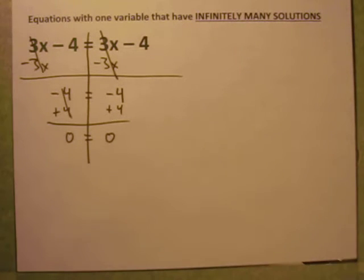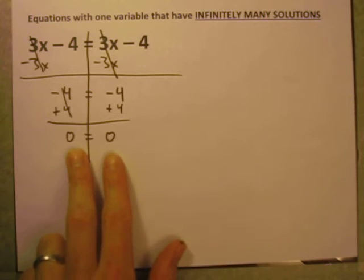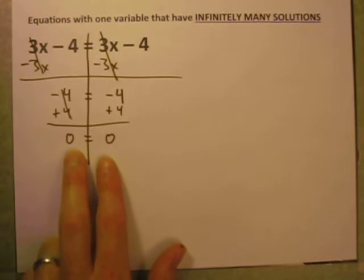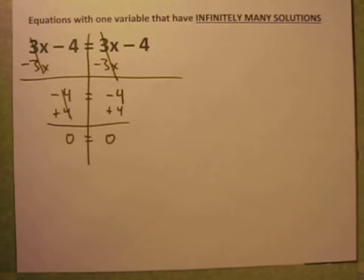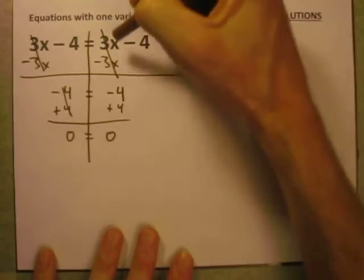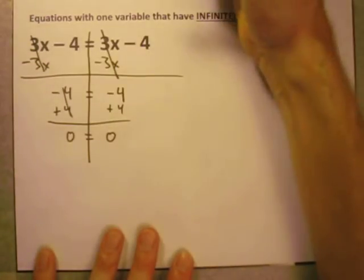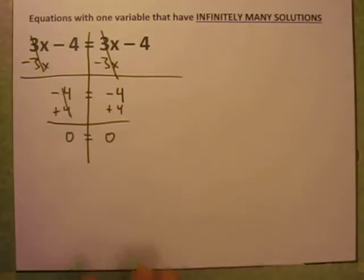0 equals 0 is one of the most boring equations you could possibly imagine. But if you see something like this, you know something weird is going on. If this is the case, this is one of those infinitely many solutions type of equations. Is that for real? Could we try any value in for X and both sides would always be the same? Let's try a few.